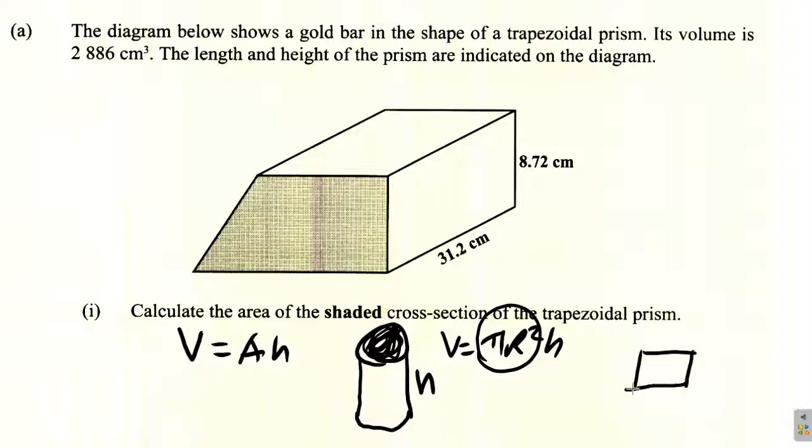If it was, say, some sort of cuboid like this rectangular box, this width times this length times this height would give the volume. But this area would be the area of the cross-section, length by width, and then times the height. So, you use the same principle.